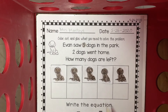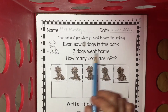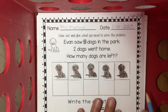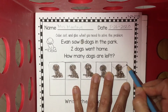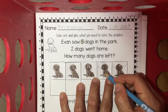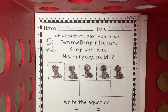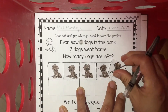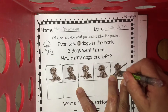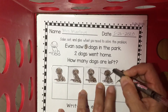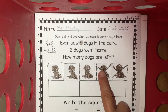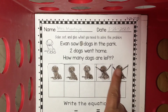Now two doggies went home. The way I'm going to show that two doggies went home is I'm going to cross them out. Let me do that with my crayon so that you can better see my X's. One doggie, two doggies. I know that those X's mean that they went home and I'm not going to count them.